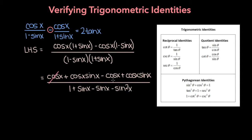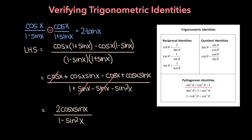Now we can cancel cosine x and minus cosine x in the numerator and sine x and minus sine x in the denominator, and that leaves us with cosine x sine x plus cosine x sine x, or 2 cosine x sine x in the numerator, and the denominator we're left with 1 minus sine squared x. Notice that if we subtract sine squared theta from both sides, we get that cosine squared theta is equal to 1 minus sine squared theta, which means 1 minus sine squared x equals cosine squared x.